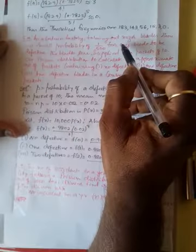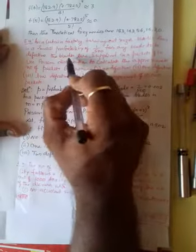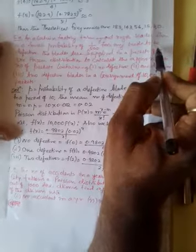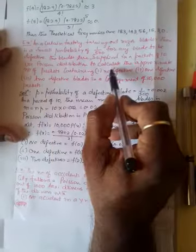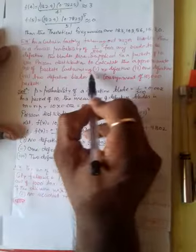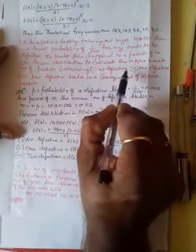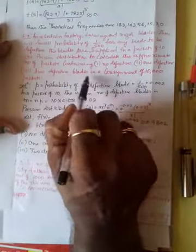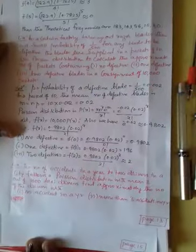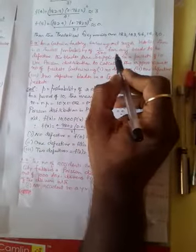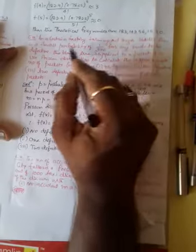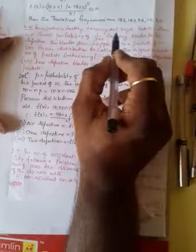Now come to another important example taken from an old question paper. In a certain factory turning out razor blades, there is a small probability of 1/500 for any blade to be defective. The blades are supplied in packets of 10. Use Poisson distribution to calculate the approximate number of packets containing no defective, 1 defective, and 2 defective blades in a consignment of 10,000 packets. Please refer to this as a very important example — the nature of this type of example is very important.